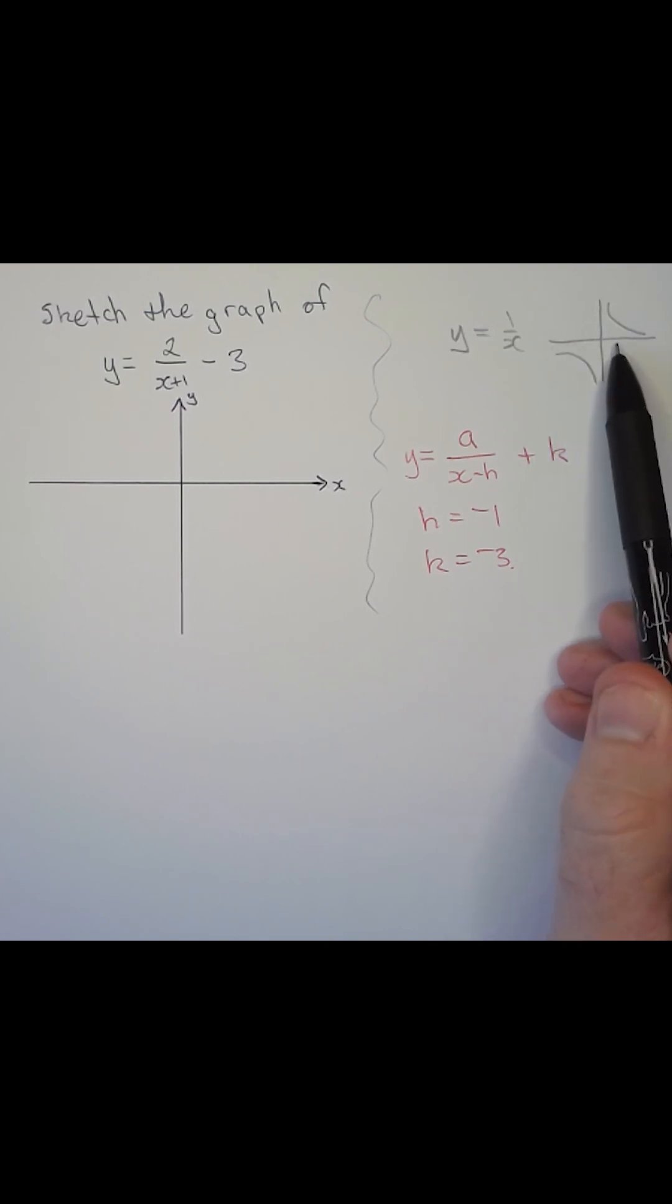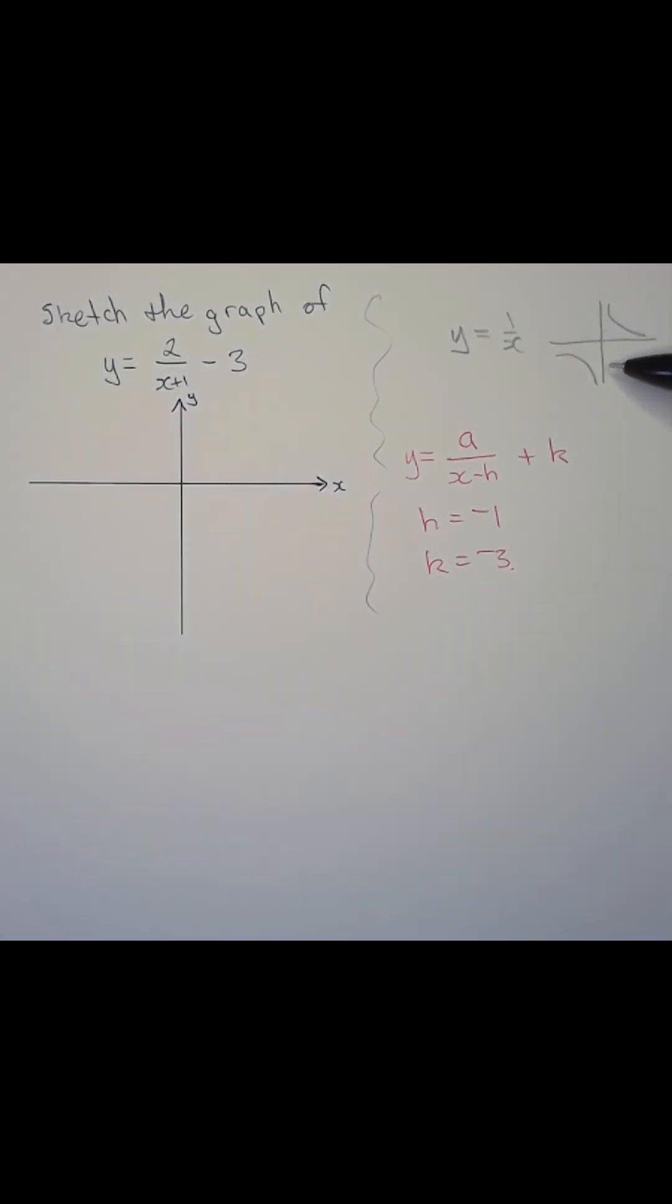Our horizontal asymptote will be shifted down to y equal to minus 3. The vertical asymptote is going to move from x equals 0 to x equals minus 1.